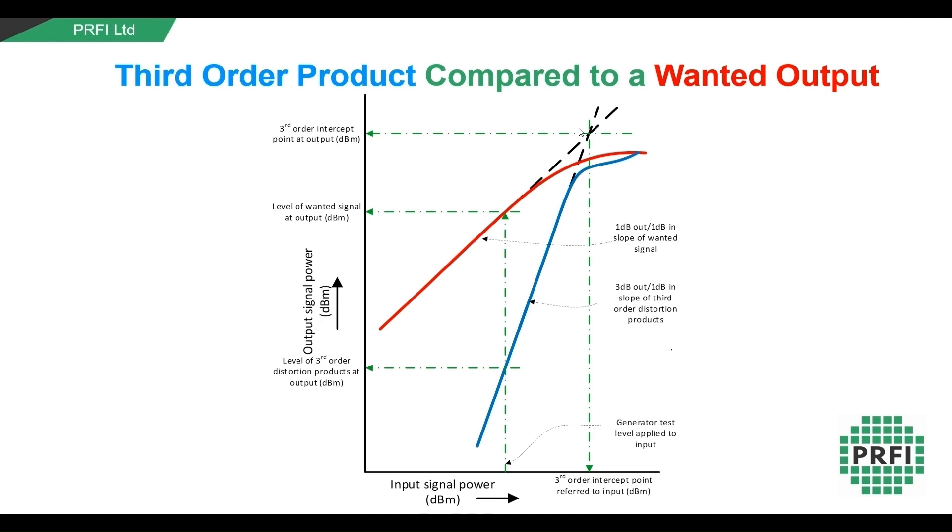The third order intercept point can either be quoted at the output, in which case you get the output intercept point, or OIP3, or it can be referred to the input, in which case you get the input referred third order intercept point, or IIP3. IP3 is usually given in units of power, for instance, dBm.